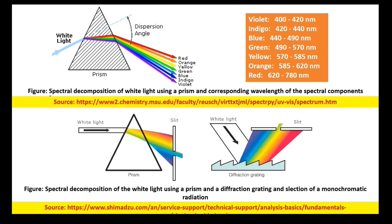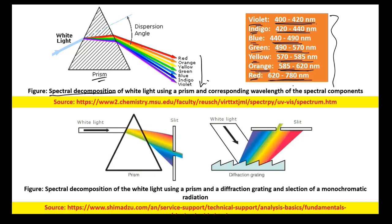For spectral decomposition, we can use a prism made of glass. White light passes through the prism and disperses into its components: violet (400–420 nm), indigo (420–440 nm), blue (440–490 nm), green (490–570 nm), yellow (570–585 nm), orange (585–620 nm), and red (620–780 nm). These are the wavelength ranges of the different visible light components.